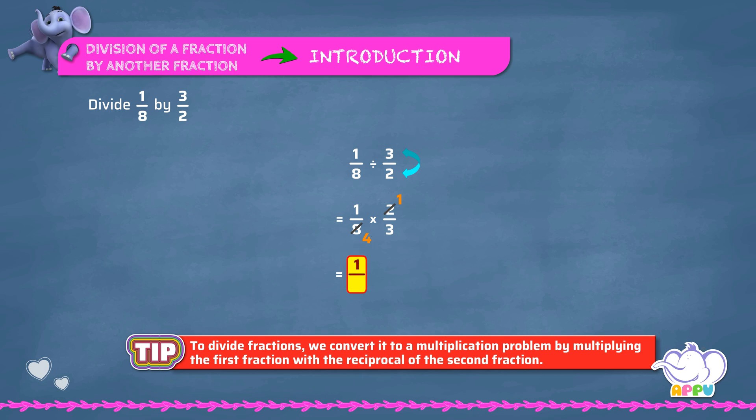We multiply the denominators: 4 times 3 equals 12. This is equal to 1/12. The answer is 1/12.